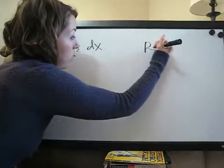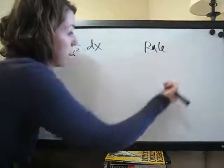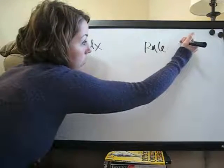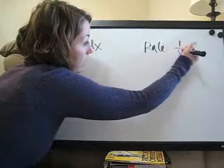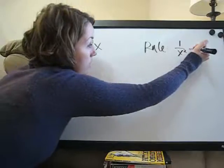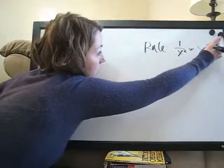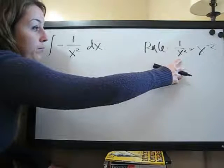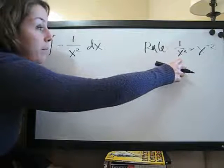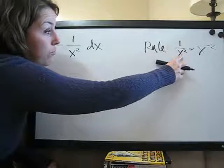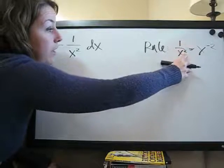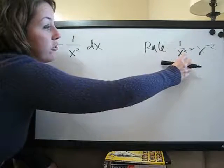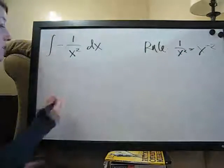I'm going to go ahead and write a rule over here. Remember, 1 over x squared is always the same as x to the negative 2. This is a rule that you can use to convert fractions to non-fractions. You can move the denominator up to the top, if it's simple like this, by just making the exponent negative. So that's what we're going to do here.